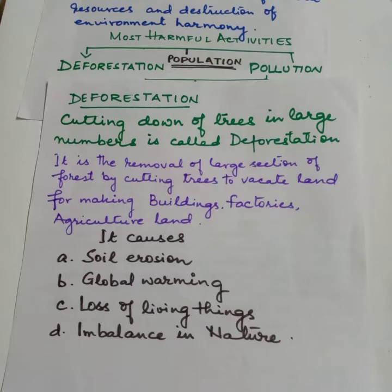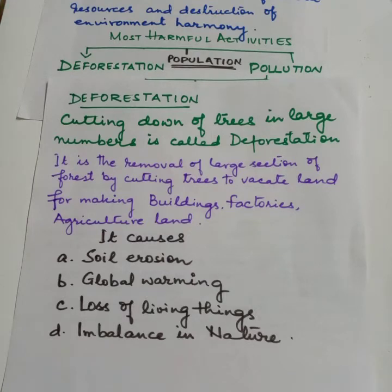Carbon dioxide gas helps retain heat around the earth so that the earth doesn't become too cold. If the amount of carbon dioxide increases in the atmosphere, the temperature of the earth would also increase, resulting in global warming. Carbon dioxide is also known as the greenhouse gas. These greenhouse gases retain heat around us, and this is referred to as the greenhouse effect.